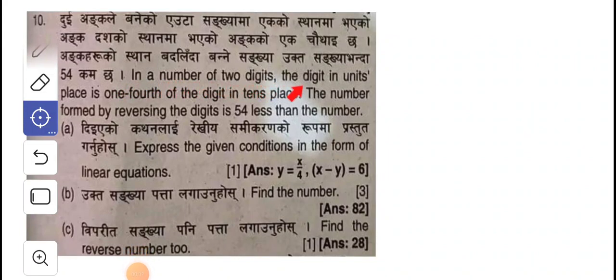A number of two digits, the digit in units place is one-fourth of the digit in tens place. The number formed by reversing the digits is 54 less than the number. Express the given conditions in the form of linear equations.